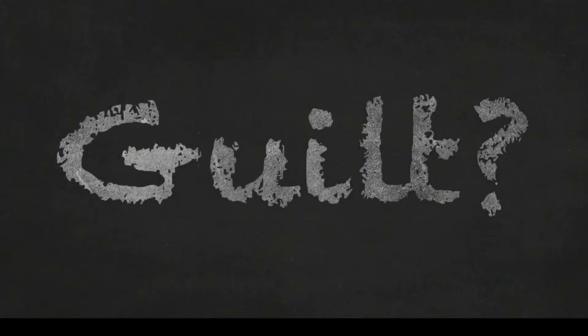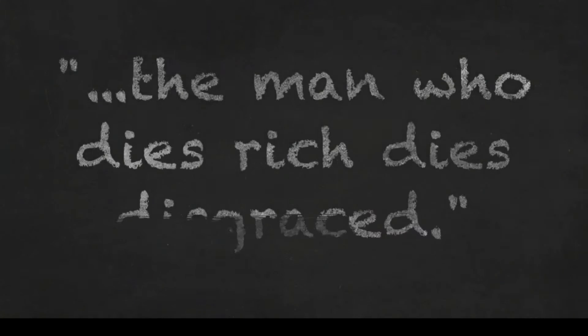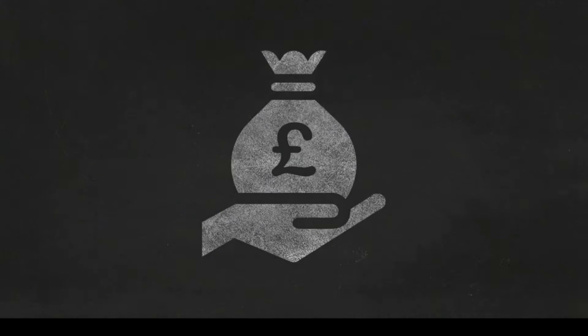In his later life Carnegie felt guilty about this. I think he did anyway. One of his most famous quotes is: the man who dies rich dies disgraced, and he didn't want to die rich. So Carnegie made a commitment to give away all of his wealth before he died.